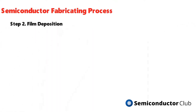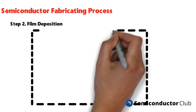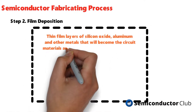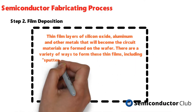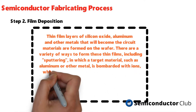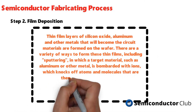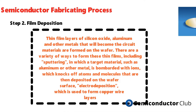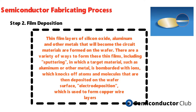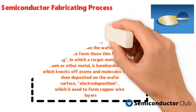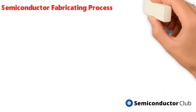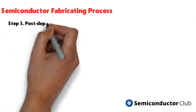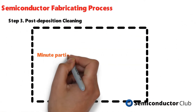Film deposition: thin film layers of silicon oxide, aluminum, and other metals that will become the circuit materials are formed on the wafer. There are a variety of ways to form these thin films, including sputtering — in which a target material such as aluminum or another metal is bombarded with ions, knocking off atoms and molecules that are deposited on the wafer surface — and electrodeposition, which is used to form copper wire layers.